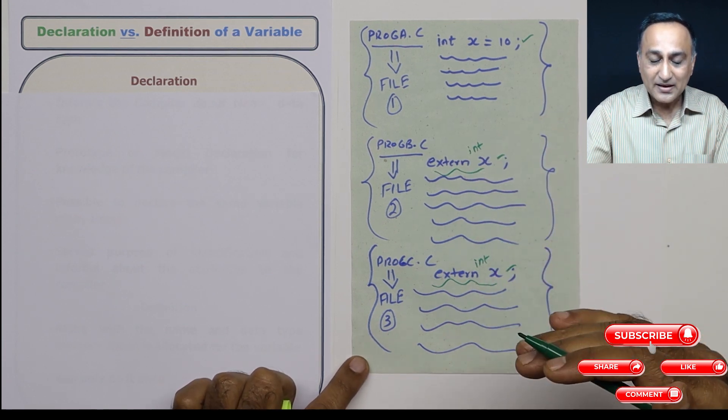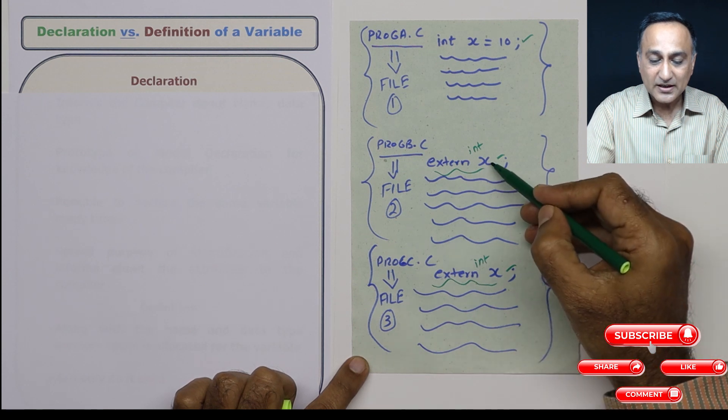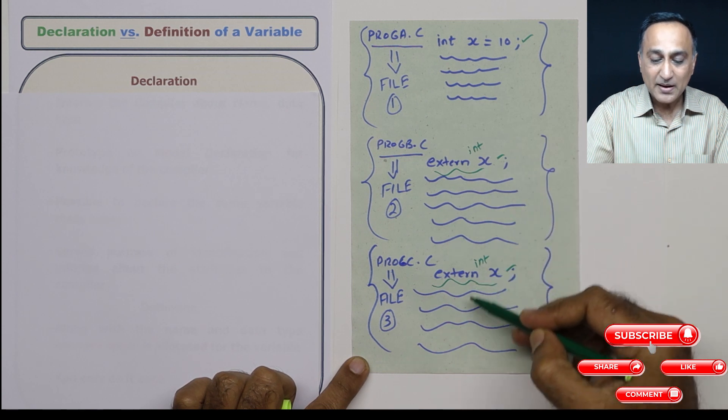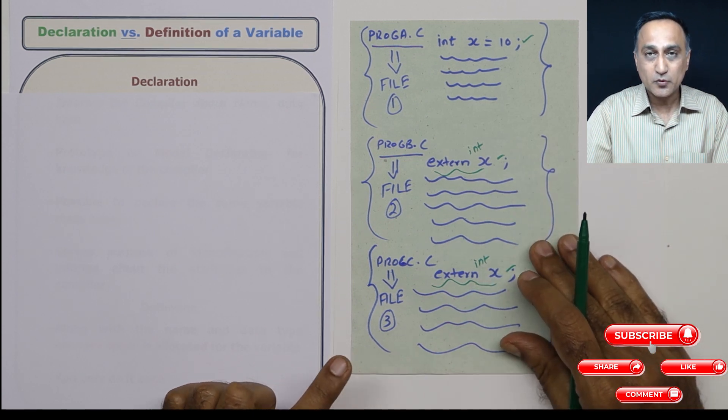So the compiler needs to know the data type of x, which I am showing here, and extern tells it that it is defined somewhere and I'm going to use it within this particular program.